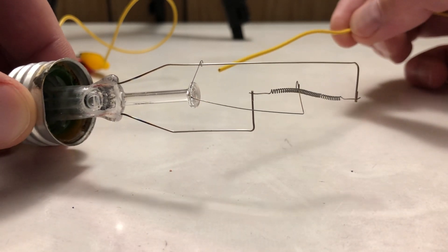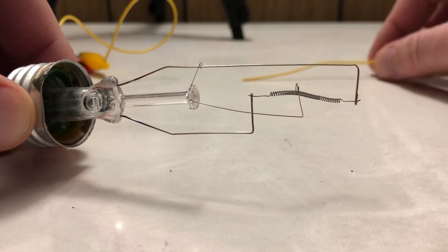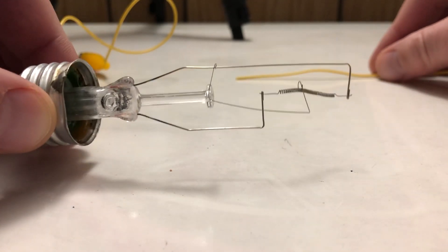So there you have it—those are the parts of the inside of a light bulb.